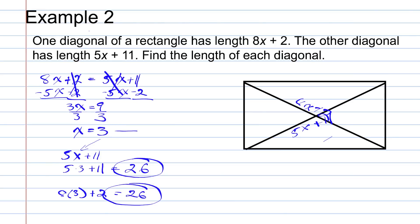Don't stop at X equals 3. A lot of students want to stop there because they've solved the equation, but that doesn't answer what's being asked. We're told to find the lengths of the diagonals, so we have to take it one step further than most students are used to.